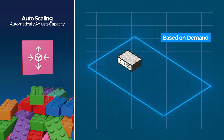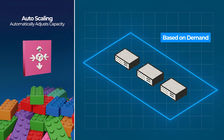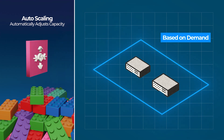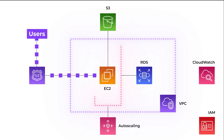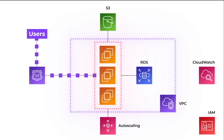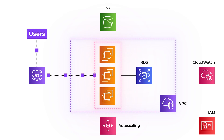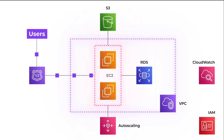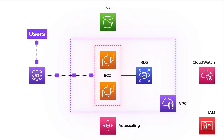Auto Scaling is the AWS service that adds or removes instances based on demand. During high traffic, more servers are launched automatically. When traffic decreases, the servers scale down to save costs.